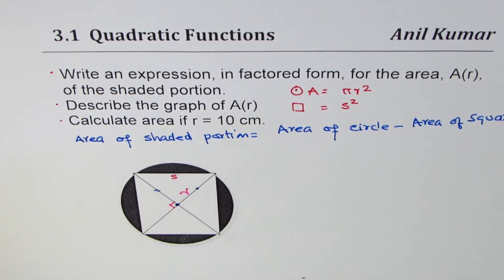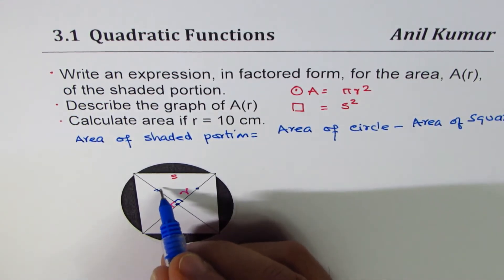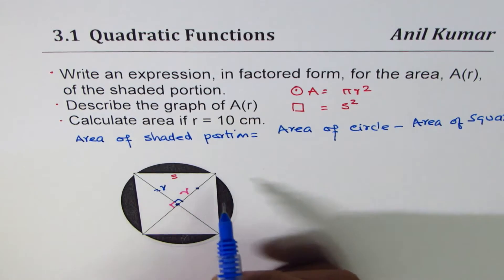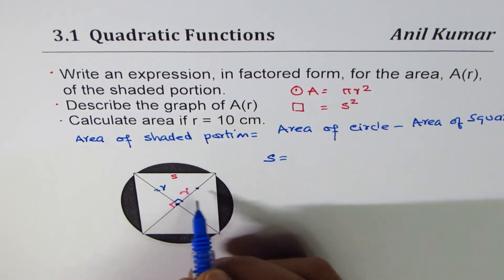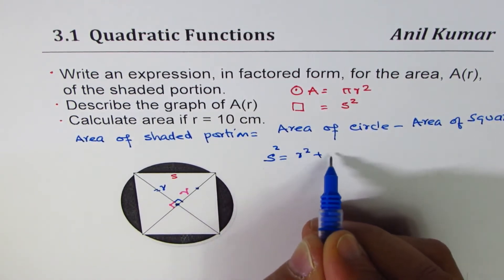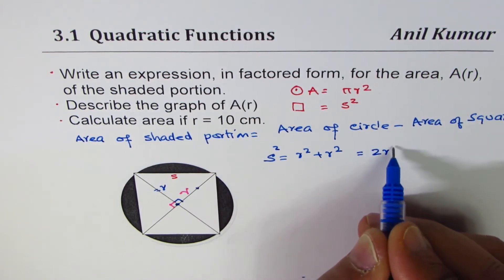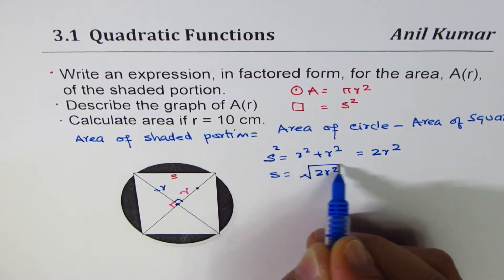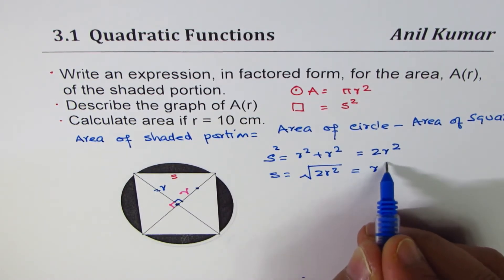In this particular figure, we know this is a right triangle - two sides are r, hypotenuse is s. So s² equals r² plus r², which gives us 2r². Therefore s equals square root of 2r². Since lengths are always positive, we take the positive value, which is r√2.